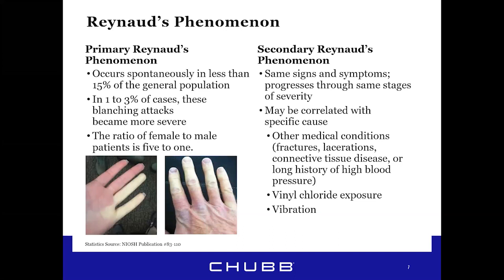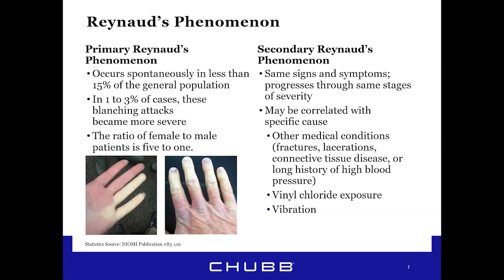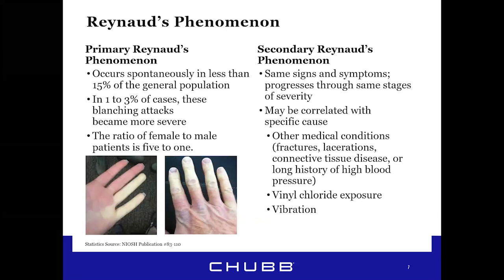Other parts of the body affected by Raynaud's include the ears, nose, nipples, and lips. Secondary Raynaud's can be correlated with fractures, lacerations, connective tissue disease, or a history of high blood pressure. We know today that exposure to vinyl chloride can be a contributing factor, as well as a history of vibration exposure. The first power tool was invented in 1895 by a German company called CNE Fein — it combined an electric motor and a manual drill and weighed 16 pounds. Consequently, Raynaud's phenomenon became much more common during the 20th and 21st centuries.